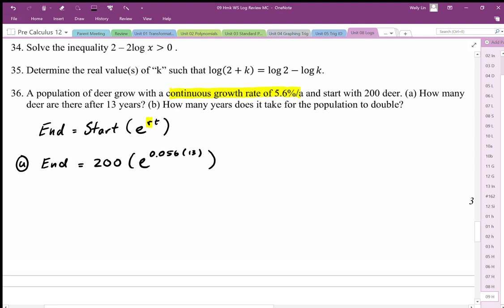Punching this into our calculator, we get 200 e to the power, e to the power 0.056 times 13.